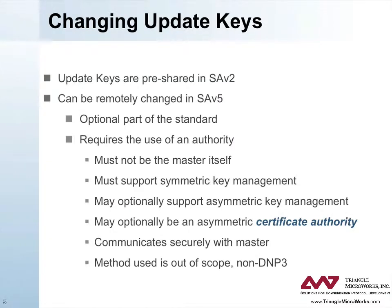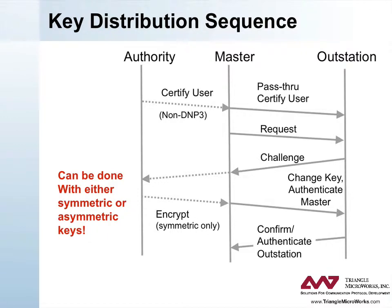In DNP3 Secure Authentication Version 2, or DNP3 SA-V2, update keys were pre-shared. DNP3 SA-V5 adds the ability to change the update keys remotely. This capability is optional and requires the use of an authority. The authority cannot be the master itself and must support symmetric key management. It may optionally support asymmetric key management and optionally be an asymmetric certificate authority. The authority must communicate securely with the master. The methods of implementing the authority are outside the scope of DNP3. The most likely solution is that the DNP3 specification will identify symmetric cryptography as mandatory and public or asymmetric cryptography as optional for changing update keys.